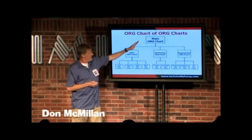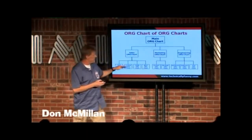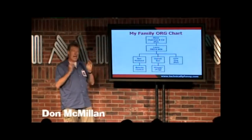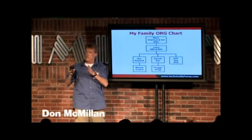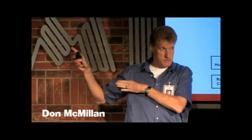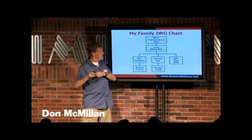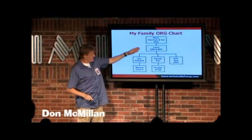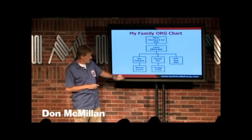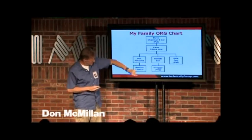Here's an org chart of org charts: my main org chart, my sales, marketing, and engineering org chart, a reorg chart — every company should have one. And here's my actual family org chart. Steve, our cat, runs our family. If you have a cat, you know that's true. Any animal that says 'I just pooped in there, somebody clean that up' is clearly ahead of the family. My wife Laura reports to Steve, I report to my wife, and the remote control reports to me. That's my entire region of domain.